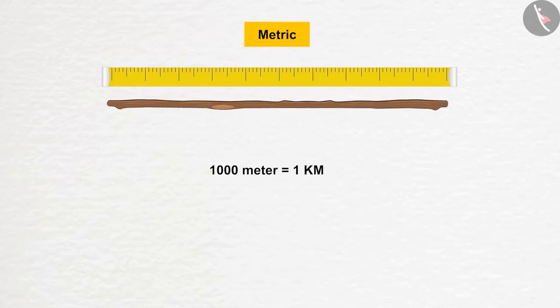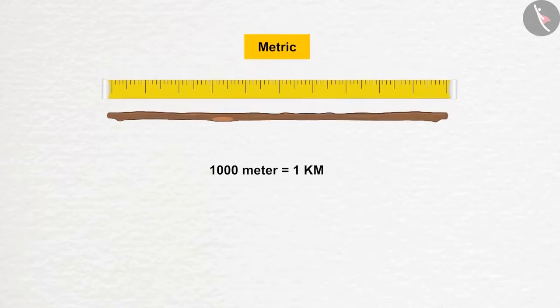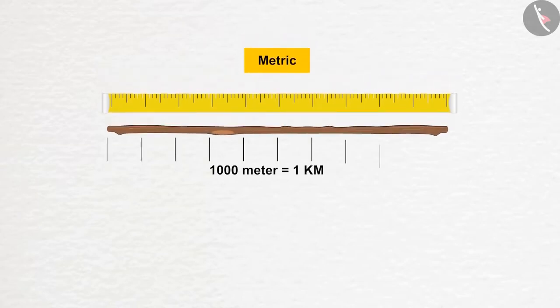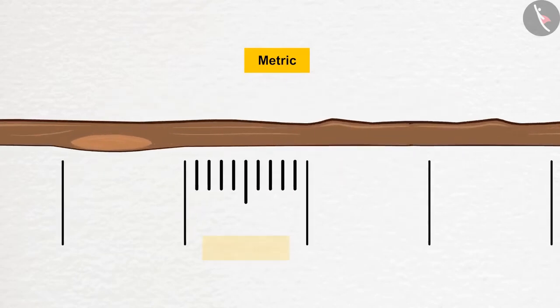And what if we need to measure smaller distances? For that, if you mark ten equal sized marks on the meter stick and then divide the tenth part again in ten parts, each section is equal to a centimeter, which is used to measure smaller distances.